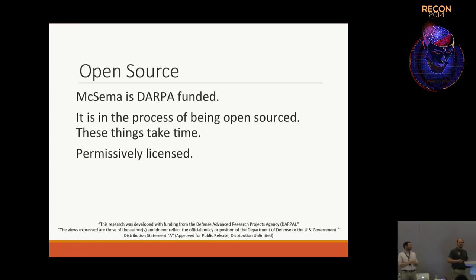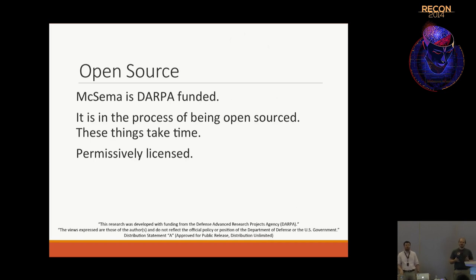We will open source MC-SEMA — we are interested in doing it, we're doing it. The government needs to tell us we can, and as soon as they do, it will be done. When we release it, we're going to release it under a two-clause BSD license, which is quite permissive. Anyone can take this code and use it for any purpose, commercial or open source.